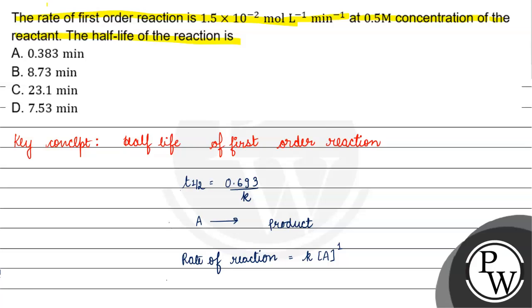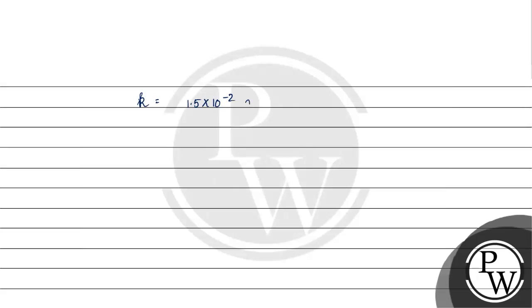Rate of reaction is basically equal to 1.5 into 10 raised to the power minus 2 mol per liter per minute. Dividing by 0.5 mol per liter, we get K equal to 3 into 10 raised to the power minus 2 per minute.